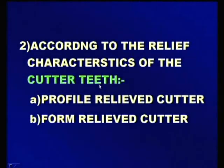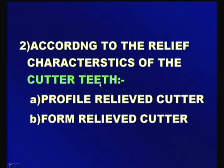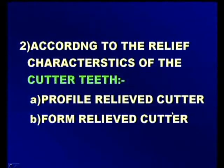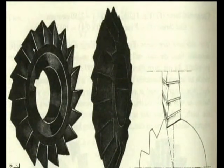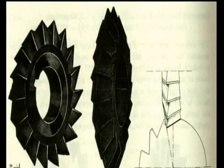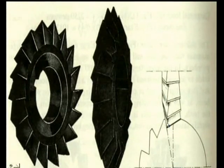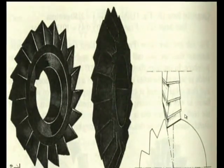The second classification is according to the relief characteristics of the cutter teeth. The cutters are named as profile relieved cutter and form relieved cutter. Profile relieved means the cutting edge is relieved so as to get the required shape on the workpiece. The profile on the cutting edge will be obtained on the workpiece. When it rotates over the workpiece, it leaves the required surface. This is called a profile relieved cutter.